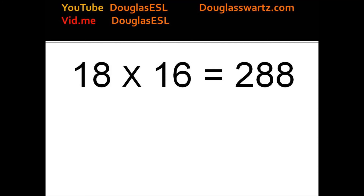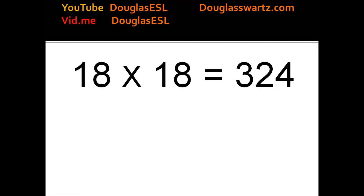18 times 16 equals 288. 18 times 17 equals 306. 18 times 18 equals 324. 18 times 19 equals 342.